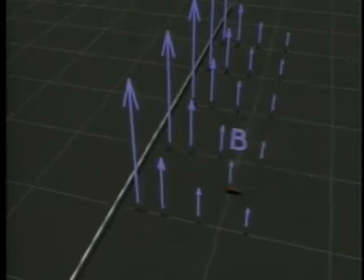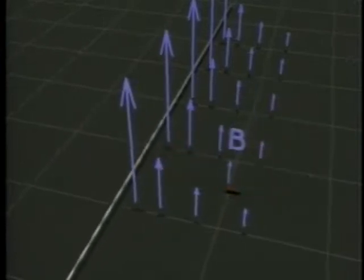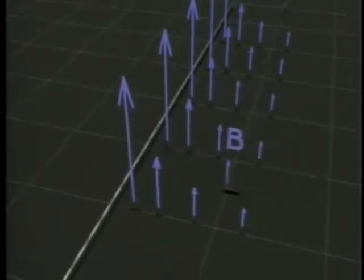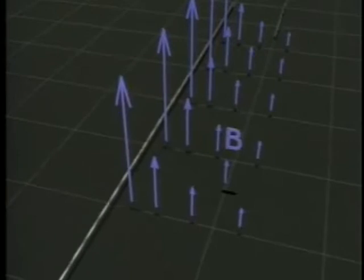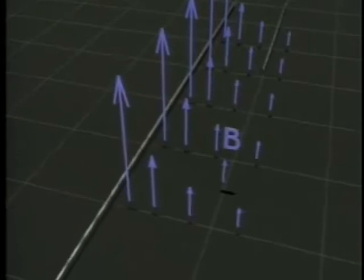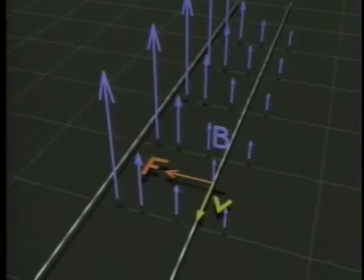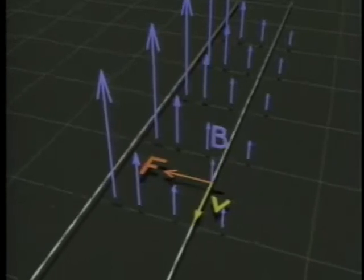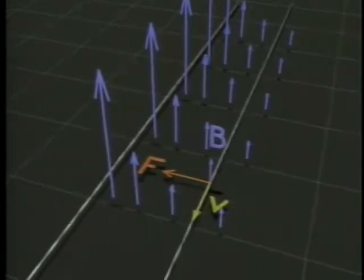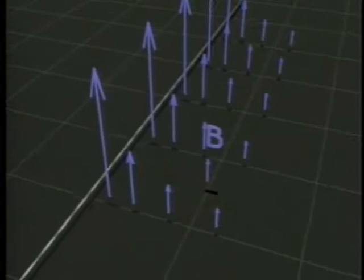Flowing electric currents apply magnetic forces to each other. Currents flowing in the same direction attract each other, and currents flowing in opposite directions repel each other.